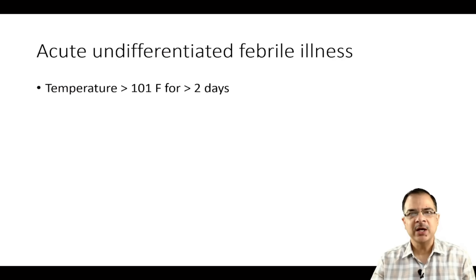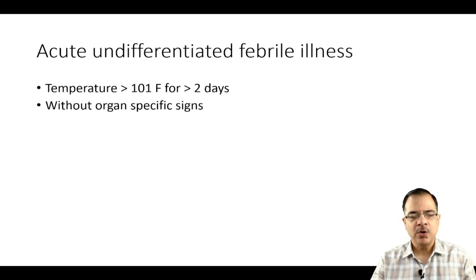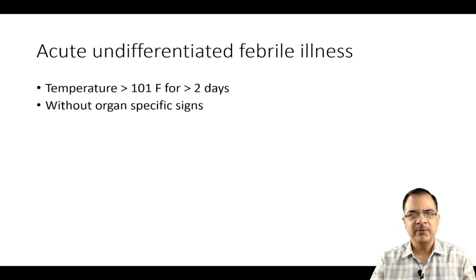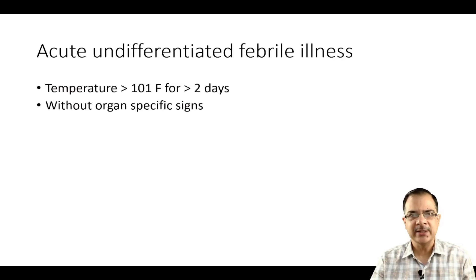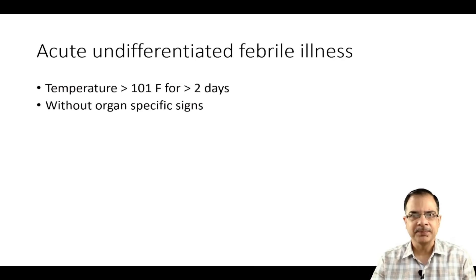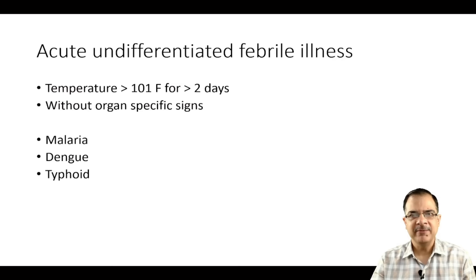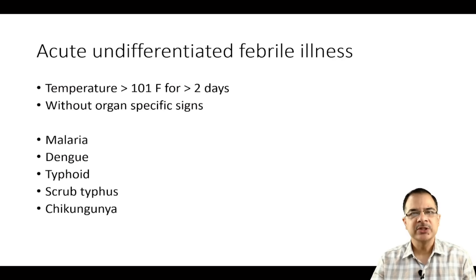The second group is acute undifferentiated febrile illness. This means there is no localized sign. It is defined by a fever of more than 101°F for more than two days without any organ-specific sign — the patient will not complain of sore throat, cough, loose motions, or burning sensation of urine. Important causes in India are malaria, dengue fever, typhoid, scrub typhus, chikungunya, and leptospirosis.